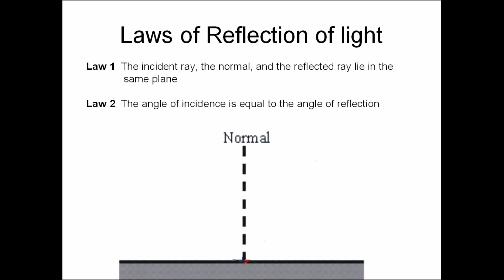The ray falling on the mirror is called the incident ray. The ray leaving is called the reflected ray. The line drawn perpendicular to the mirror where the ray strikes the mirror is called the normal at the point of incidence.